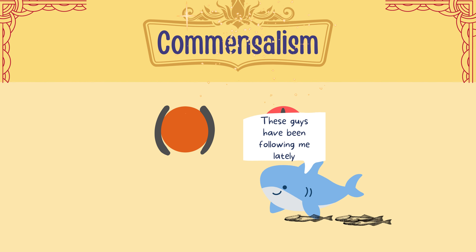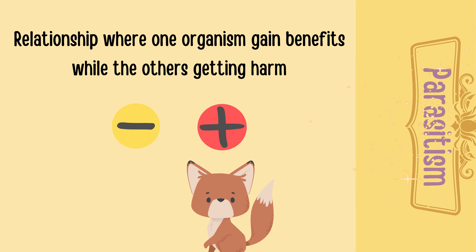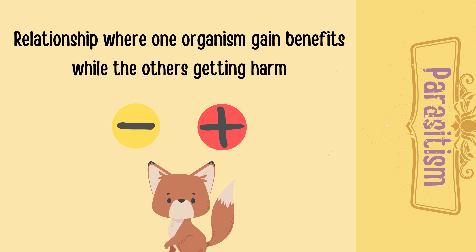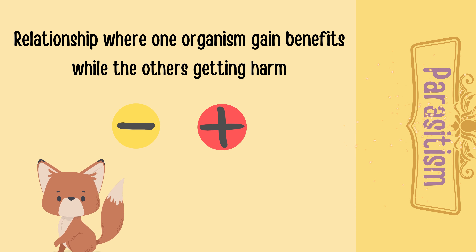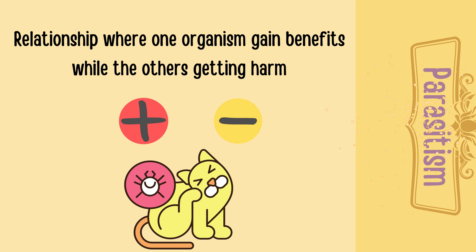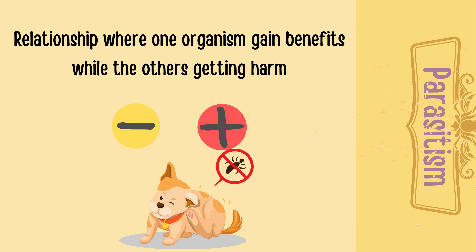And finally, we have parasitism. Parasitism is a relationship where one organism gains benefits while the other is getting harmed. It has the plus and minus symbol — one gets benefit and the other gets harm. As an example, we have a cat and tick, and similarly with a dog.